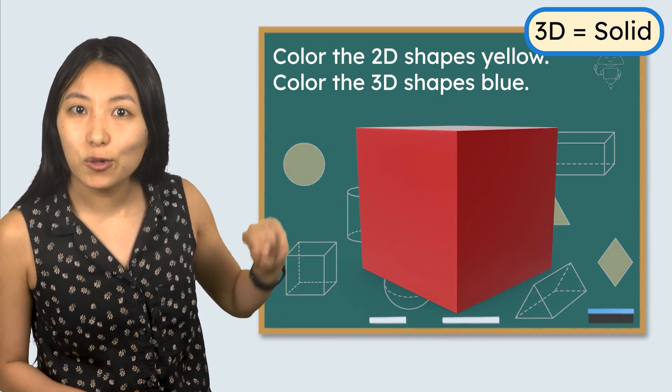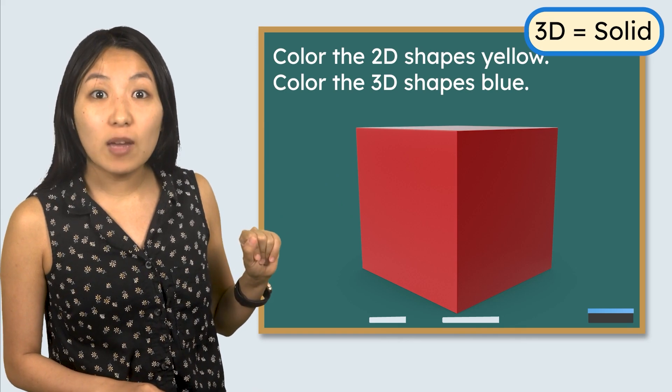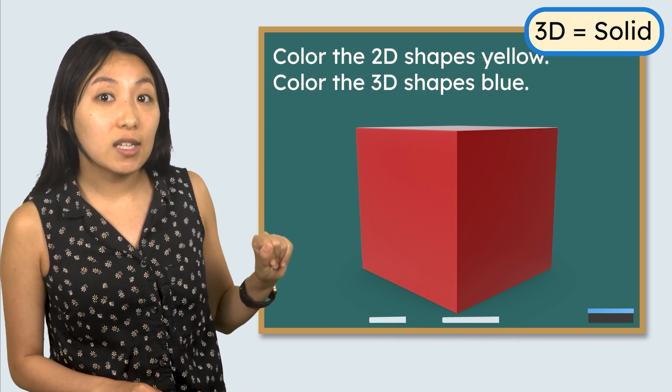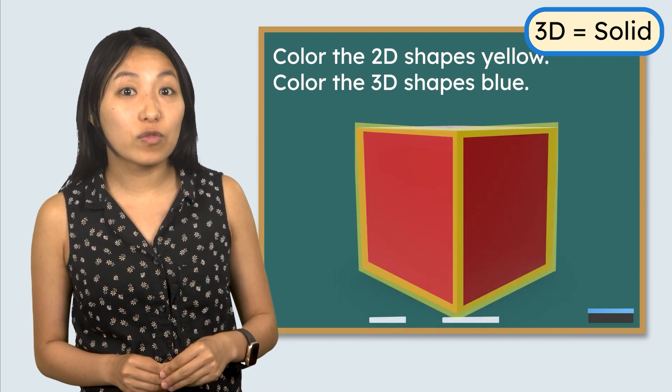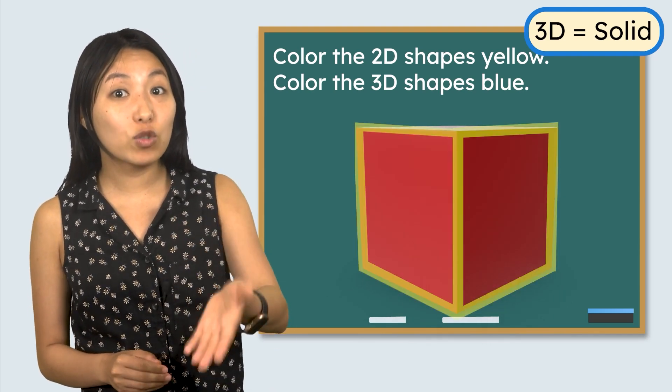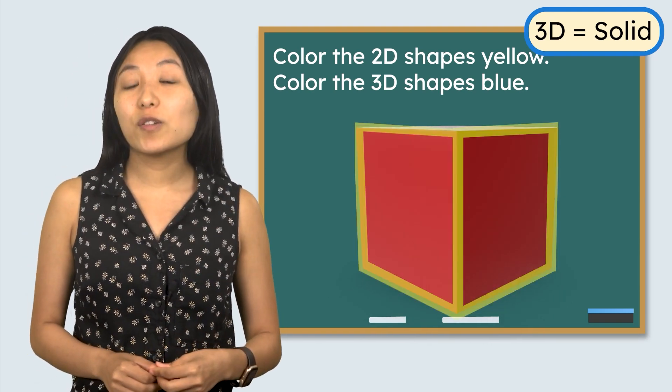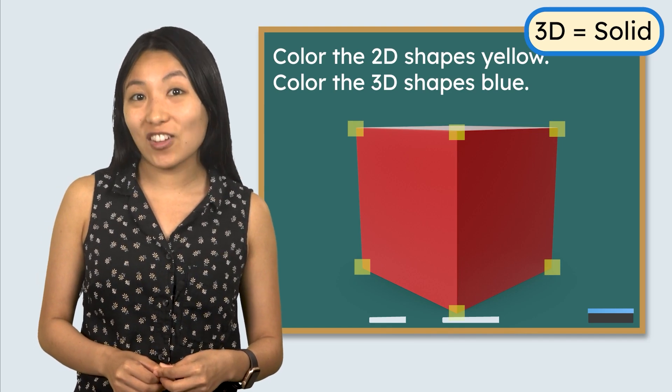I see a cube. The faces of a shape are the flat surfaces you see. A cube has six of them. Edges are where two surfaces come together. Cubes have 12 edges. A cube also has eight corners where the edges come together.